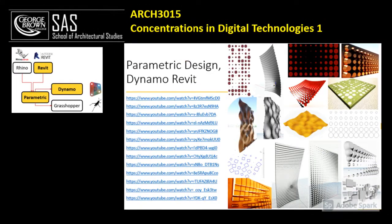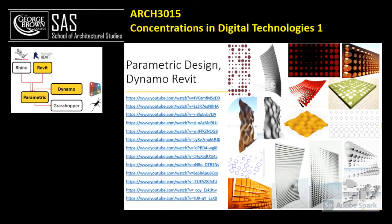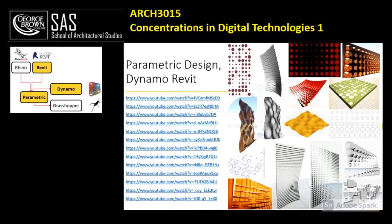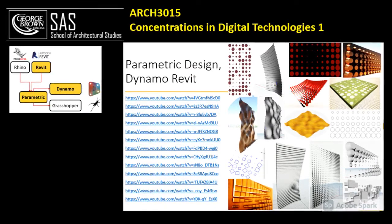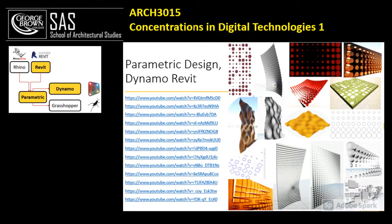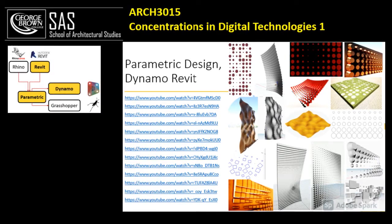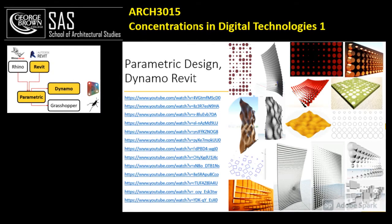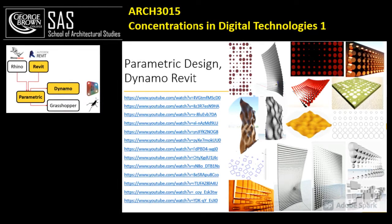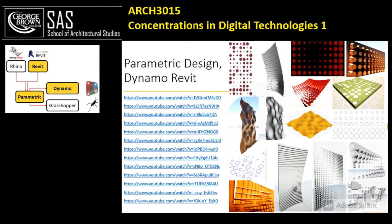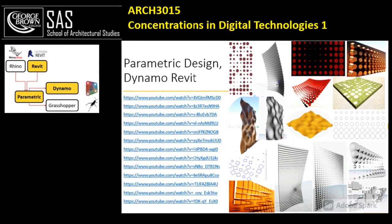In the first half of the semester, we learned more about parametric design using Dynamo in Revit. We designed both 2D and 3D patterns on horizontal and vertical surfaces using randomization, attractor point, attractor line, and so on. This helps us to create interior design elements and to design facades and different floor patterns.